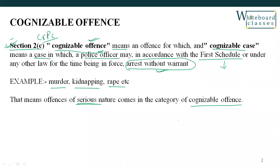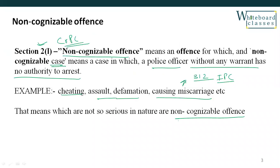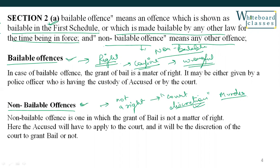To recap: Cognizable offences are those where the police have authority to arrest without warrant, defined under Section 2C of CRPC. Non-cognizable offences, defined under Section 2L, are those where the police do not have authority to arrest without warrant — the police must obtain a warrant from the magistrate. For bailable offences, bail is a matter of right. For non-bailable offences, bail is not a right; it requires an application, and it depends on the court's discretion based on the facts of the case.